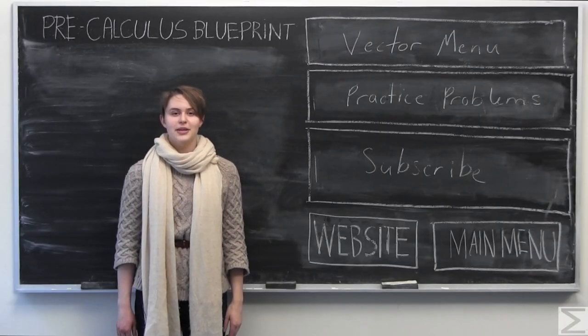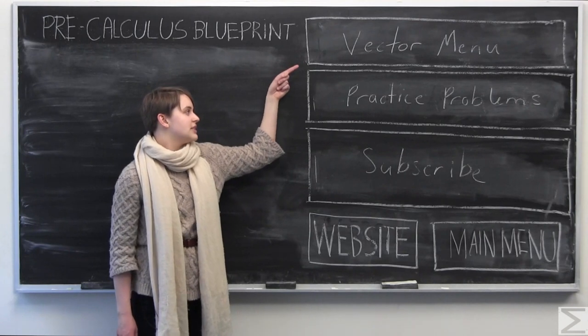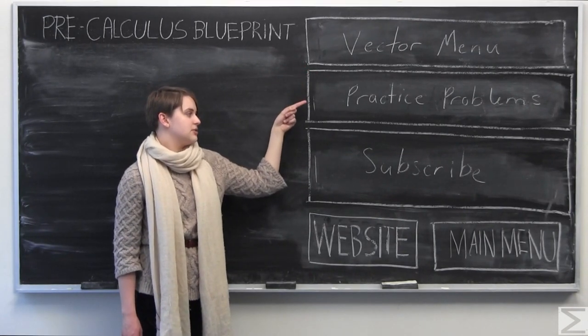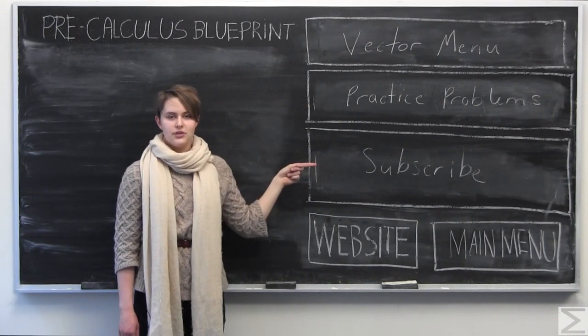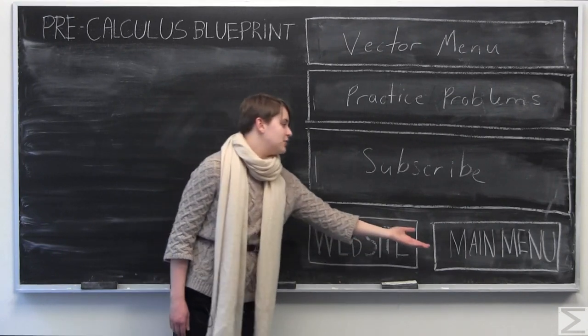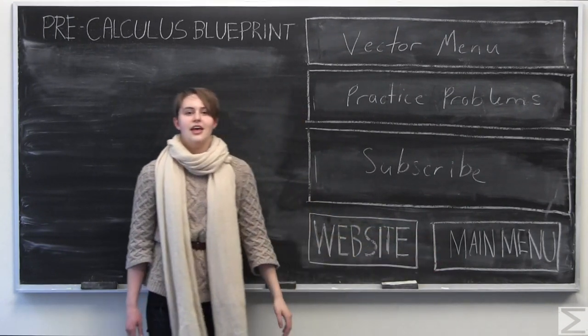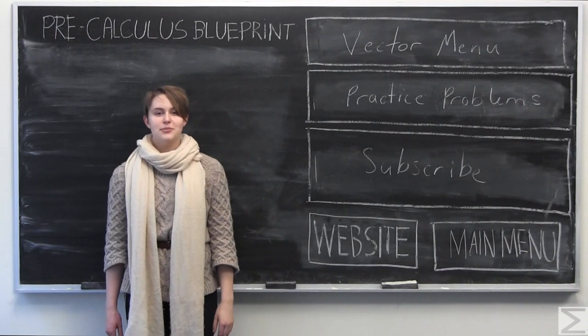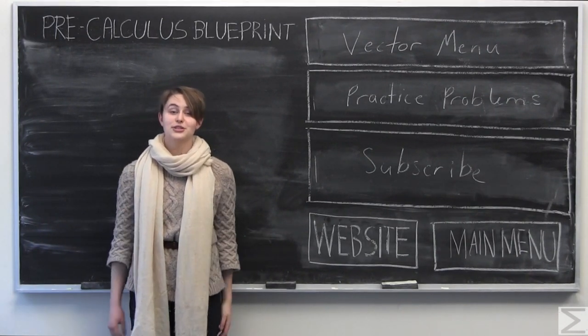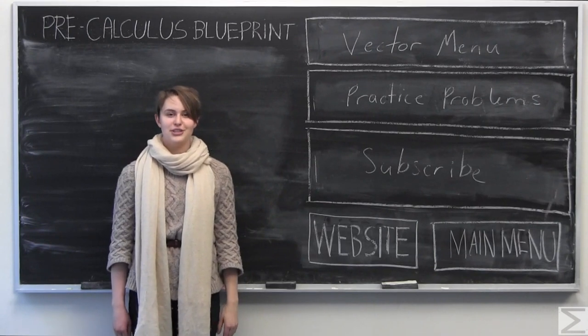To return to the vector menu, click here. To see more additional practice problems worked out, you can click here. To subscribe to our YouTube channel, click this link here. To visit our website, click here. And finally, to return to the main menu, click this link here. And remember, if you haven't already done so, you can purchase the PreCalculus Blueprint by clicking on the link in the description of this video. Remember, it's only $1.95. Thank you for watching.